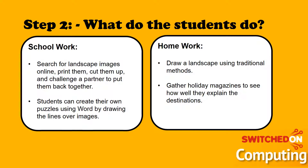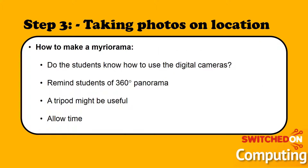To get students to appreciate how stitching works, you could get them to search for images online, cut them up and put them back together. Alternatively, go into Microsoft Word, get a picture, and using the shape tools draw outlines and get students to create their own jigsaw for other students to cut out and reassemble, so they appreciate how images are stitched together. For homework they can draw a landscape using traditional methods, or gather holiday magazines to see how destinations are described — which links well with an English project.